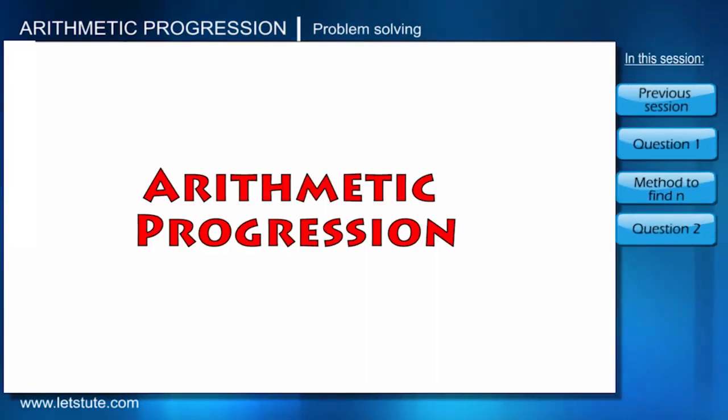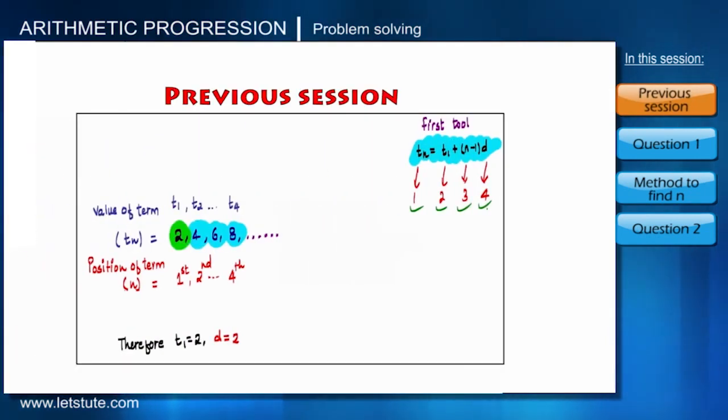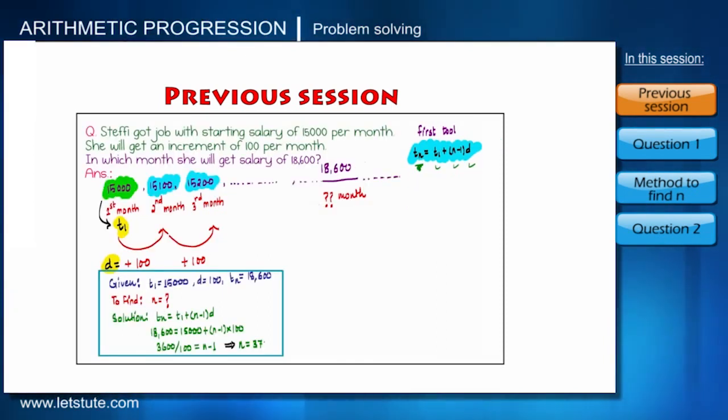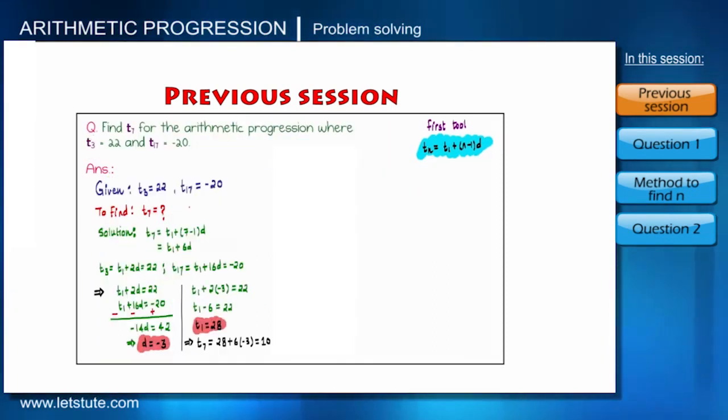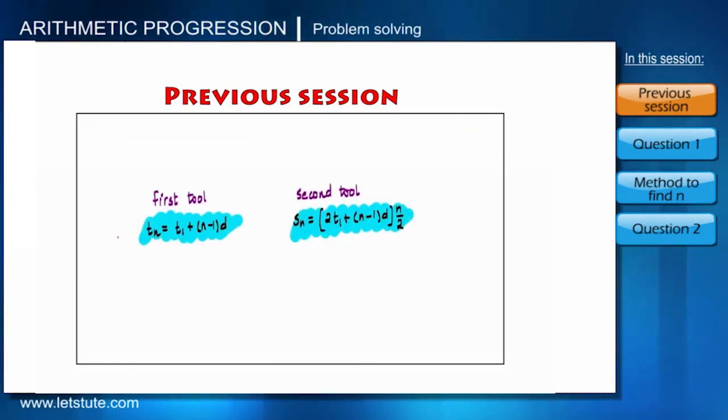As we have learned in our previous session, how to identify basic parameters from different scenarios or situations, and even we solved some questions for better understanding. We know that we have two fundamental formulas: TN and SN. In previous session, in all the questions we were taking help of the first formula only.